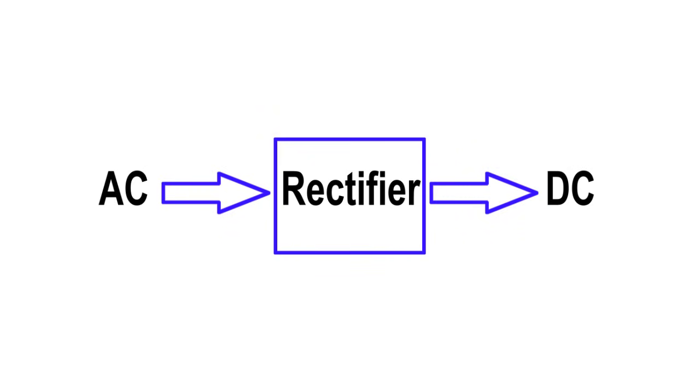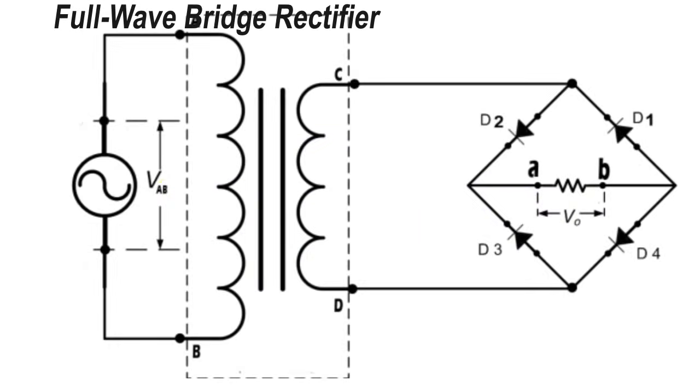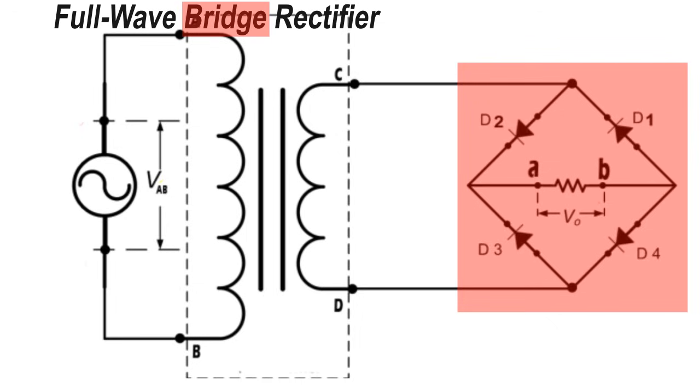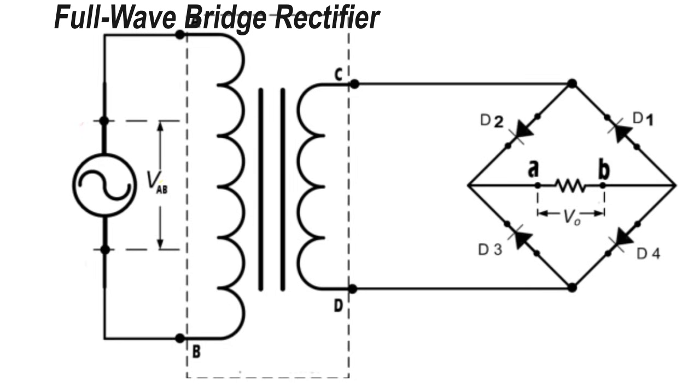The circuit used for this conversion purpose is known as a rectifier. One of the types of rectifier is known as full wave bridge rectifier. Here, full wave means the rectification, that is conversion of AC to DC, happens in both positive and negative cycle. And the circuit used for this purpose is similar to Wheatstone bridge. That's why this configuration of rectifier is known as full wave bridge rectifier.